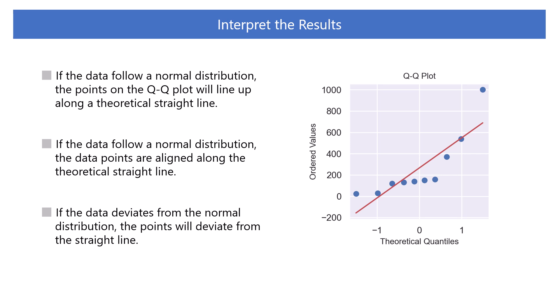If the data follows a normal distribution, the data points are aligned along the theoretical straight line. That is, the observed quantile points and the theoretical quantile points are nearly coincident.